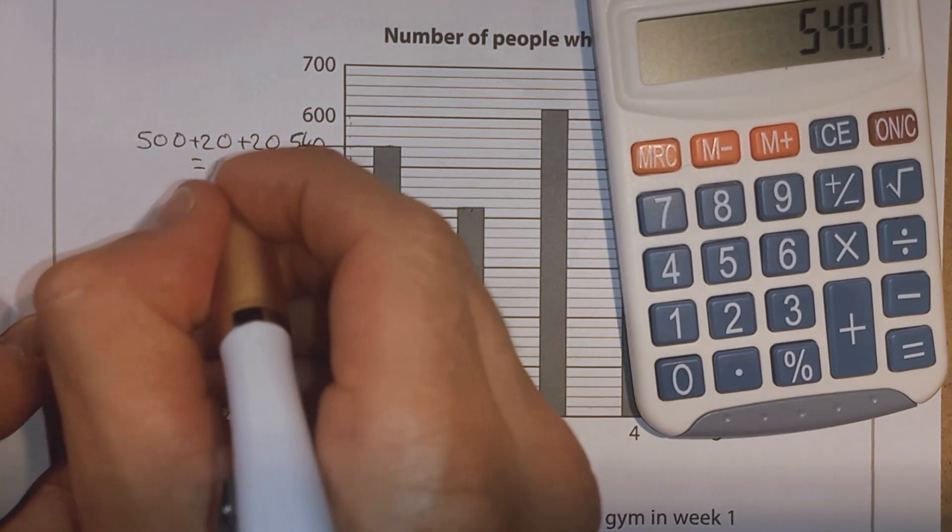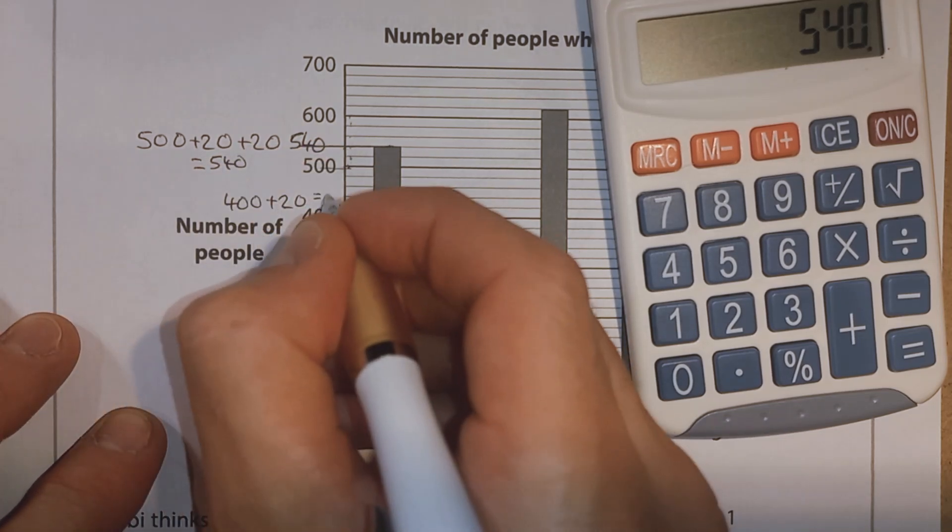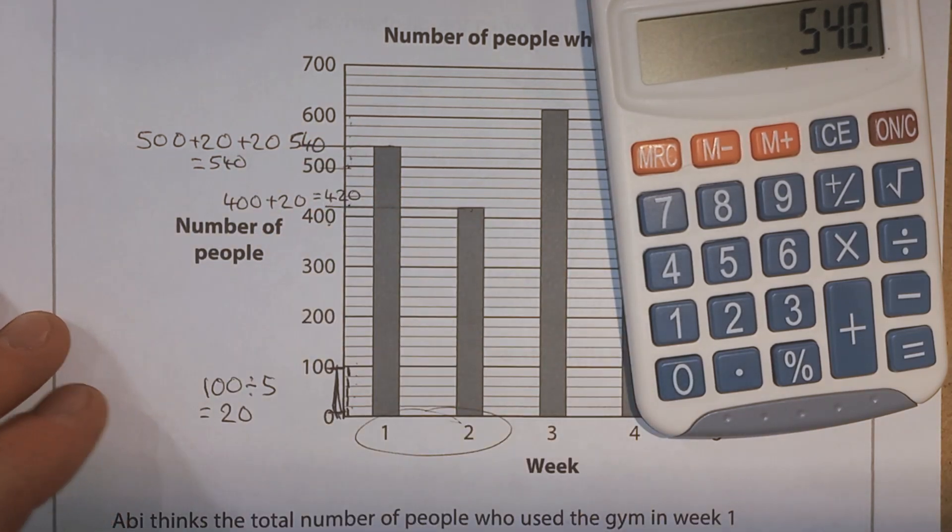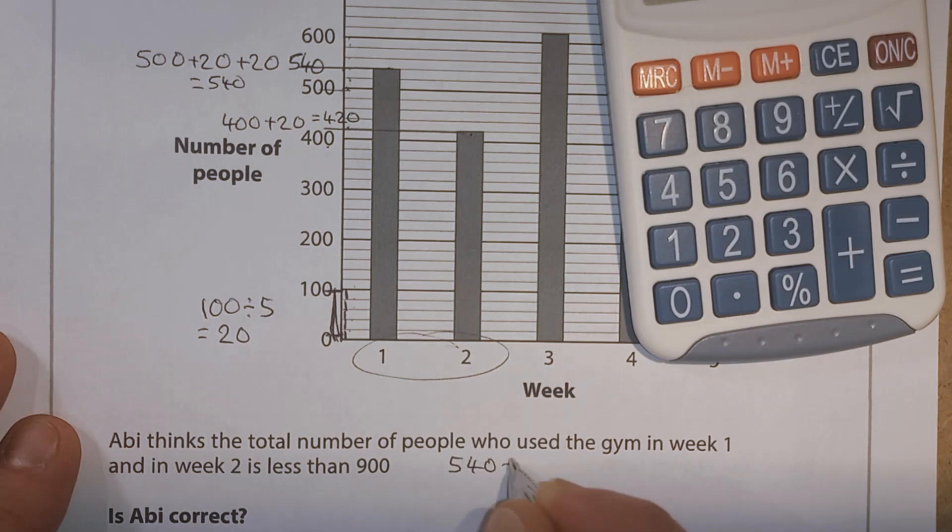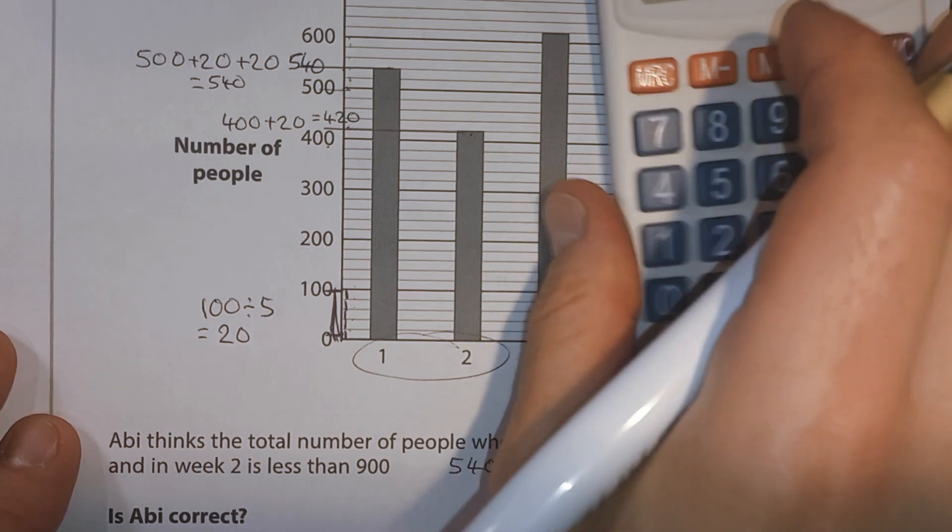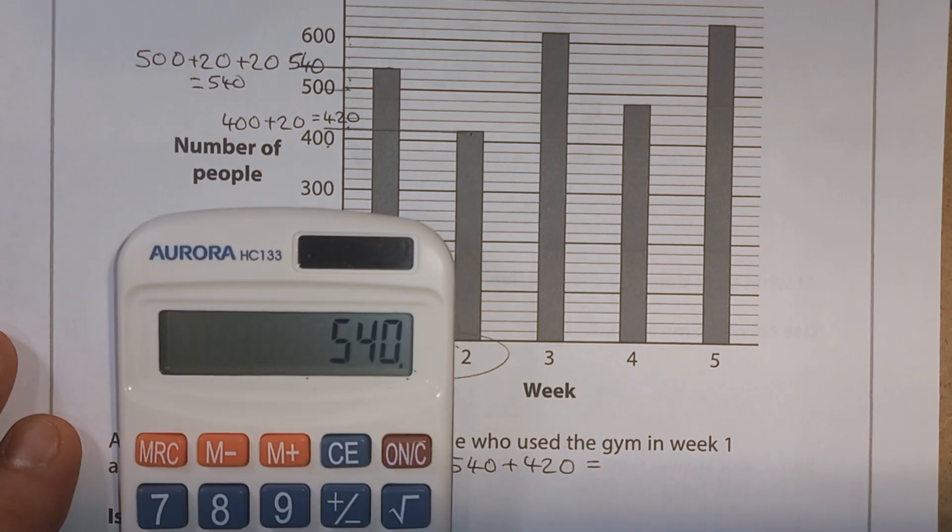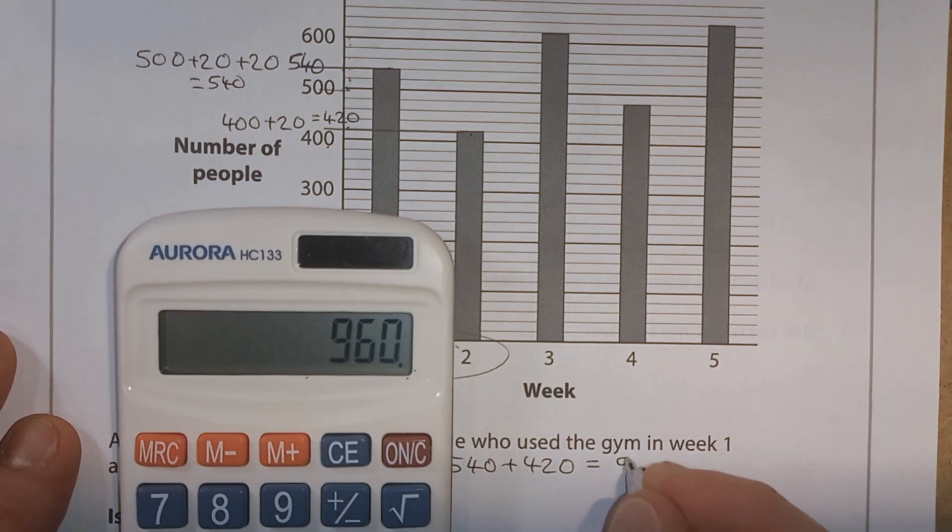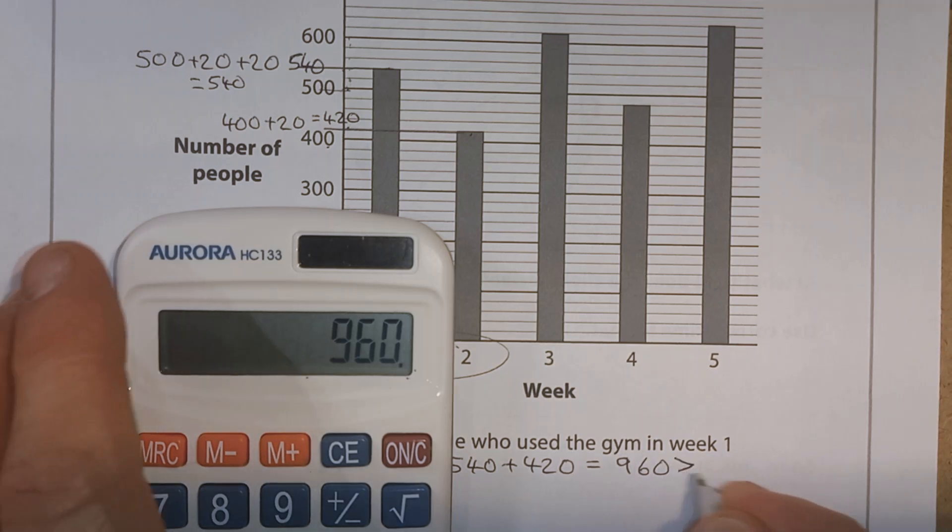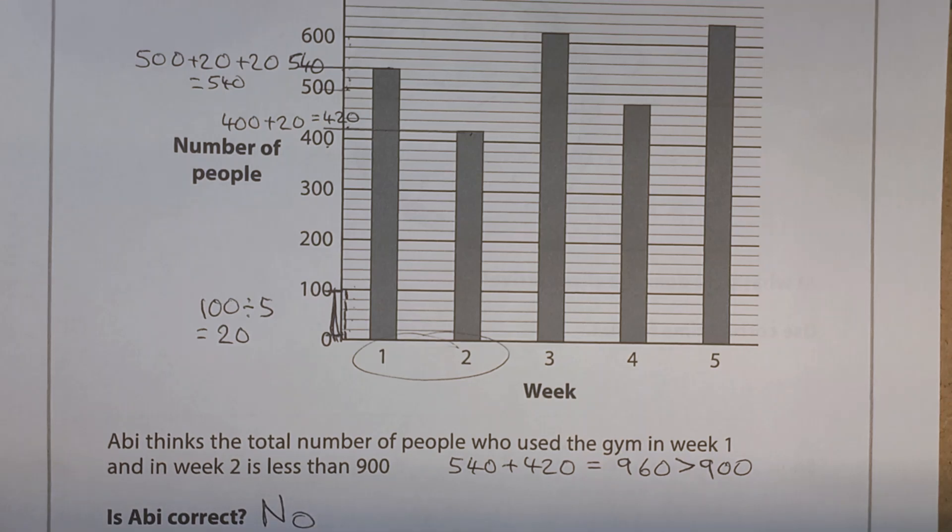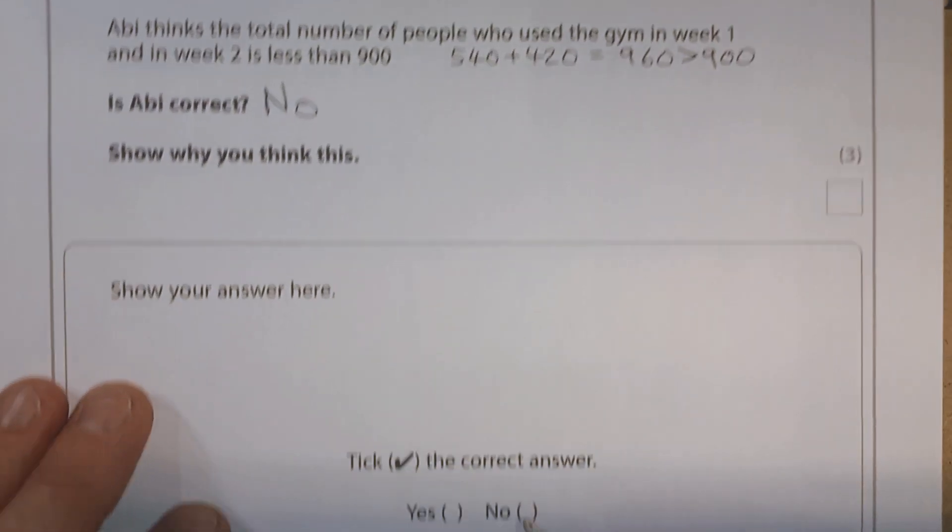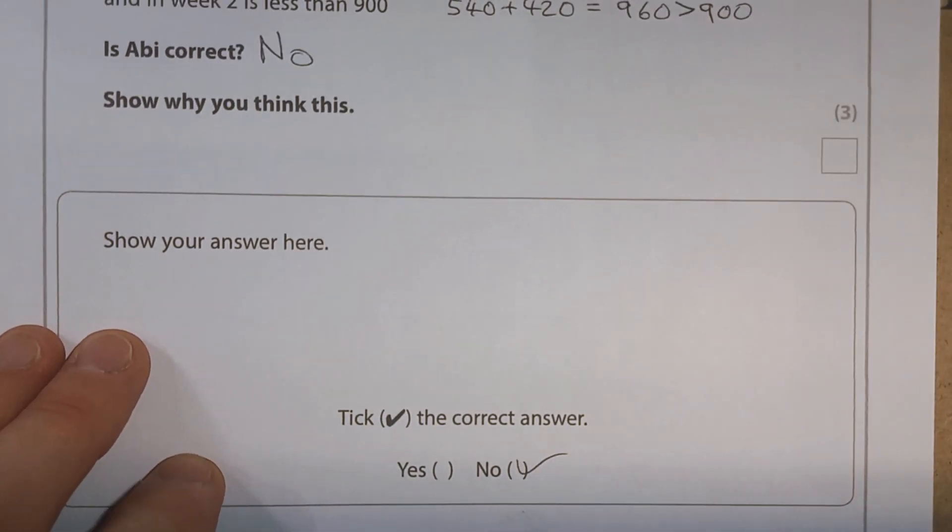So if she's interested in the total number of people who use the gym in week one and week two, we need 540 plus 420. We've still got 540 in the calculator. We can add on 420 and we get 960. Well, that is more than 900. She thinks it's less. Is Abbey correct? No. And we can tick the no box down on the no section down there.